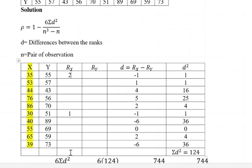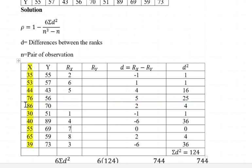Then 39 will be given rank 3. After that, 40 will be given rank 4. Then we have 44 ranked 5th. 53 will be ranked 6th, then 55 will be ranked 7th. Then 65 will be ranked 8th, then 76 will be ranked 9th, and lastly 86 will be ranked 10th. Then after that we come to column y.